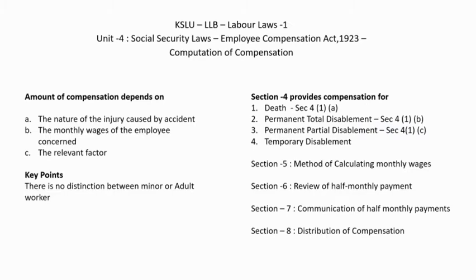Let's look into computation of compensation — how compensation is calculated at the event of an accident. The amount of compensation depends on three factors: first, the nature of the injury caused — whether it is total disablement or partial disablement, and whether it is temporary or permanent; second, the monthly wages of the deceased or injured employee.